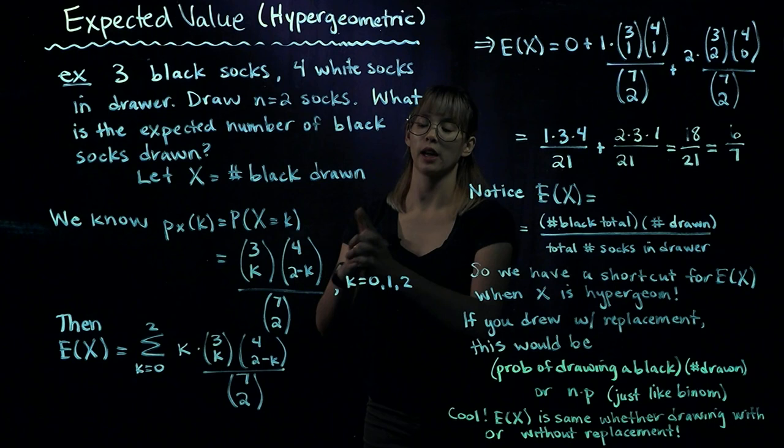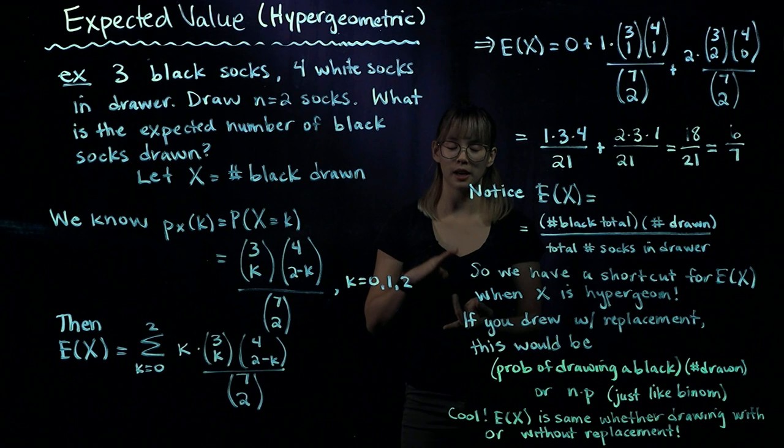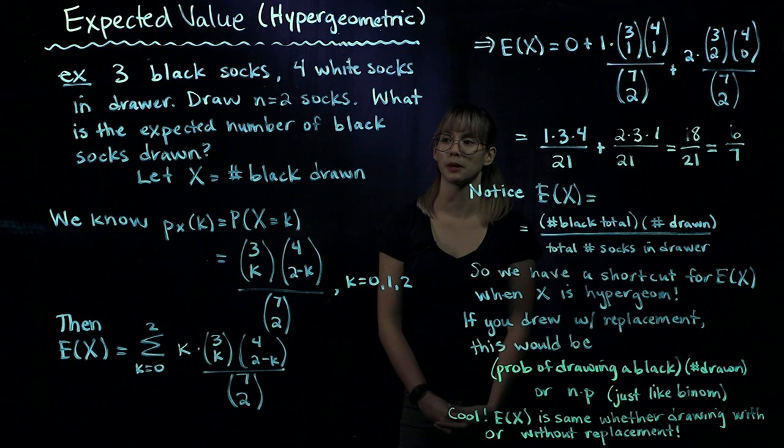This is true for K equals zero, one, or two — we could draw zero socks that are black, one sock that's black, or two socks that are black.